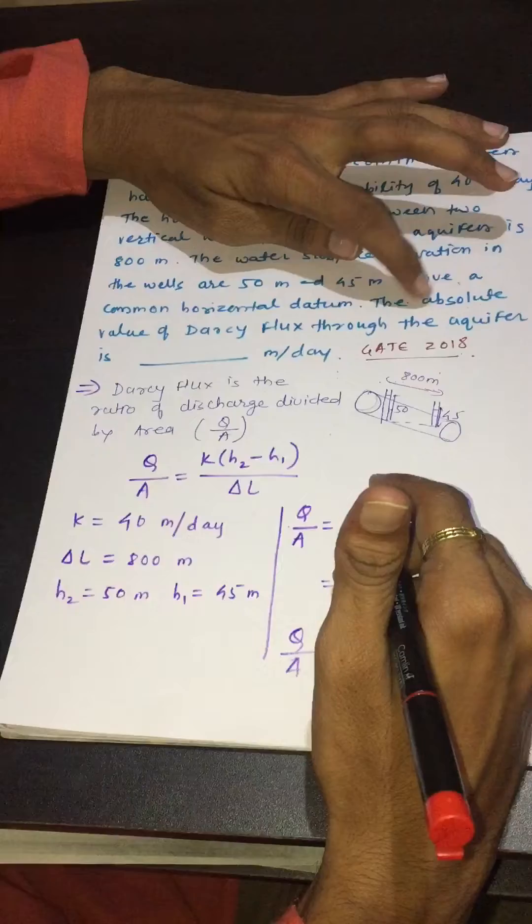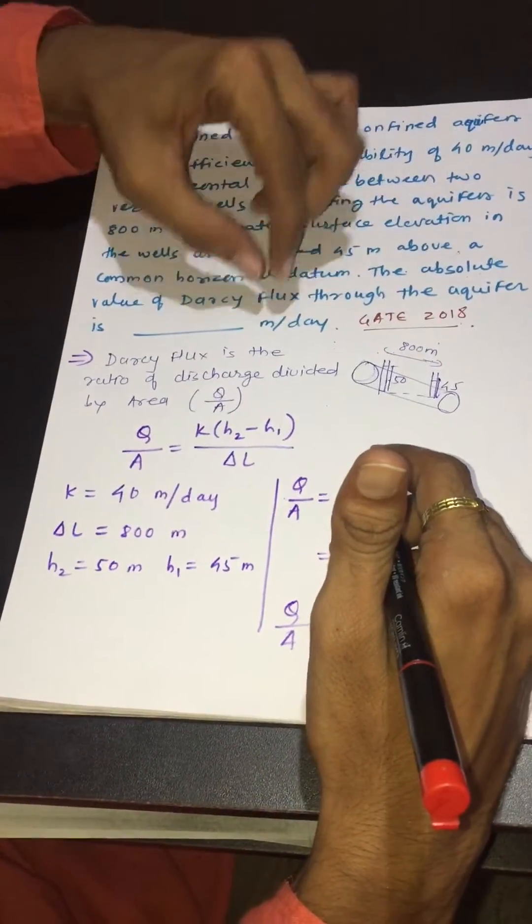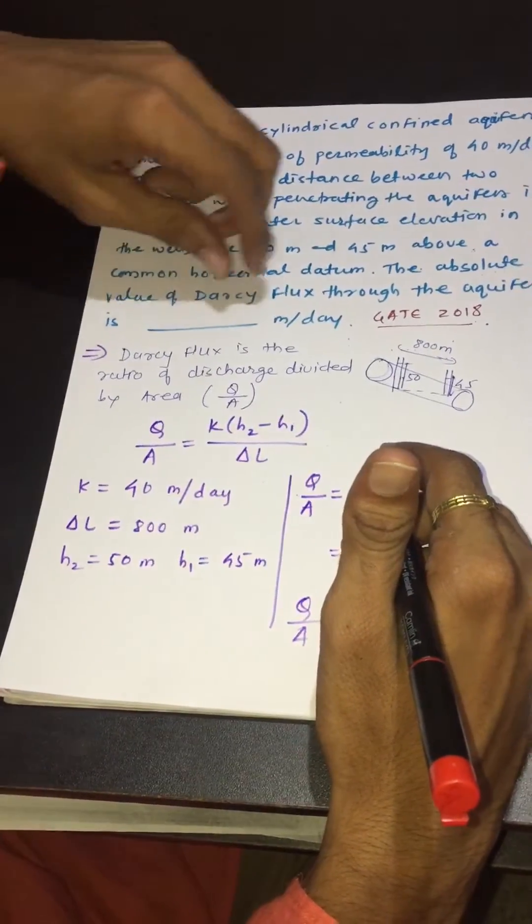The absolute value of Darcy flux through the aquifer is fill in the blanks meter per day. So that we have to calculate the answer in meter per day.